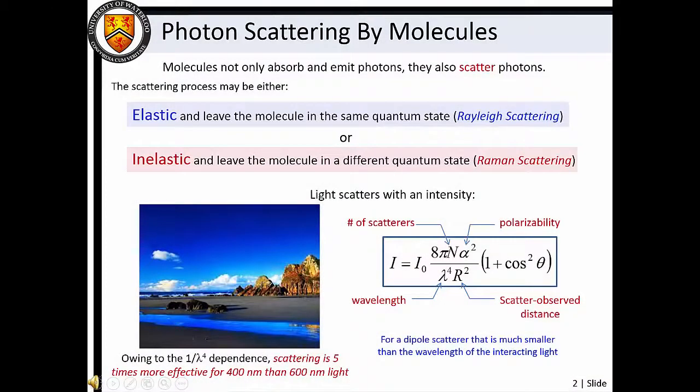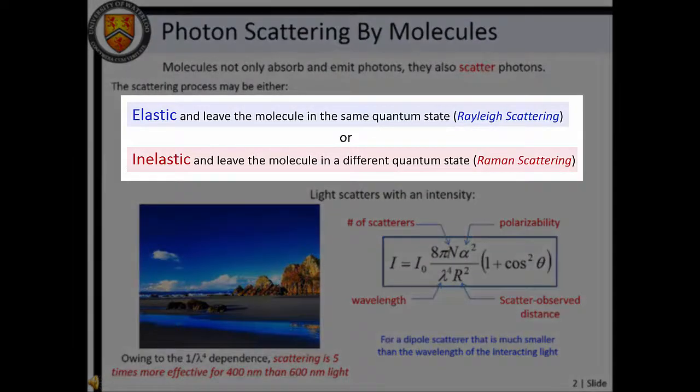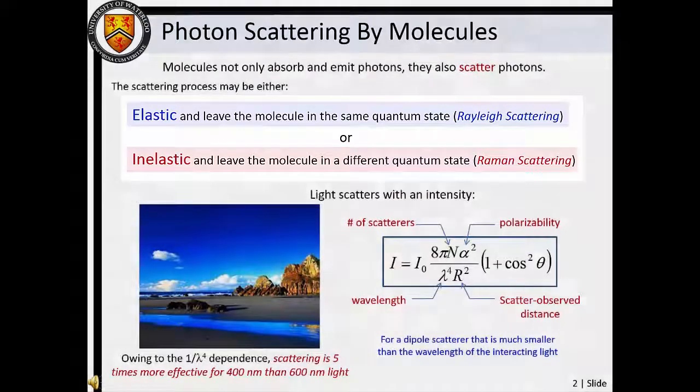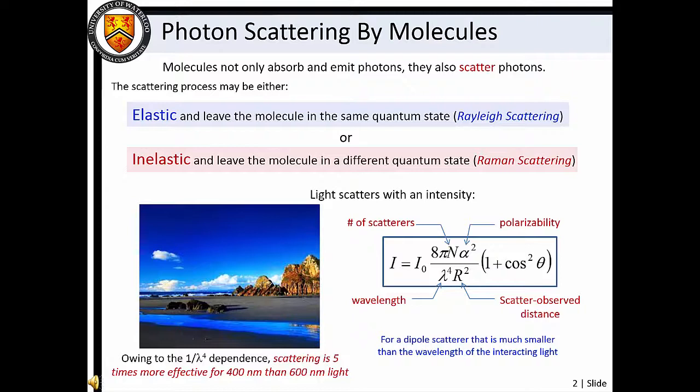Thus far in Chemistry 209, we have been concerned with the absorption and emission of light by matter. Light can also interact with matter via scattering processes. Elastic or Rayleigh scattering of light leaves matter in its original quantum state. Inelastic or Raman scattering of light results in a change in molecular quantum state during the course of the scattering process.